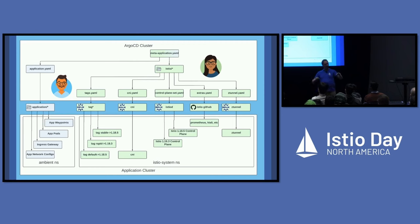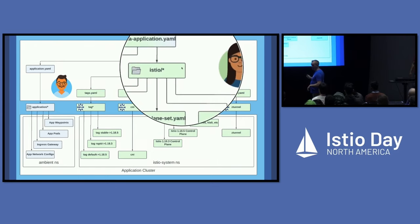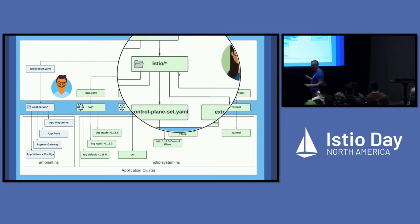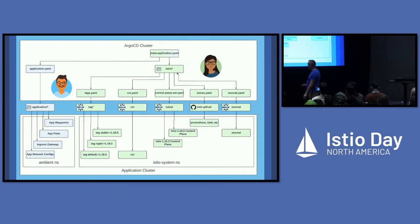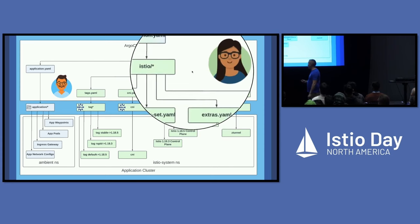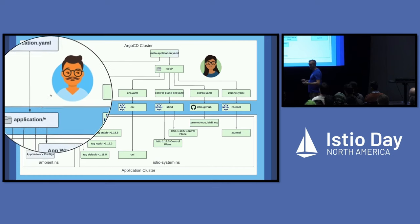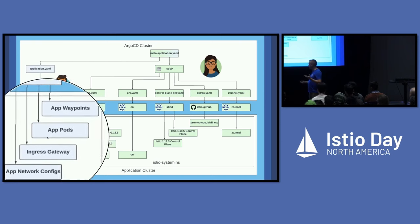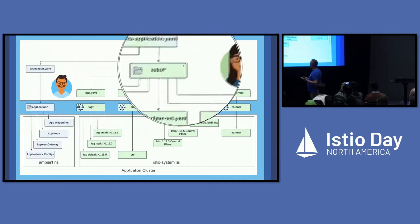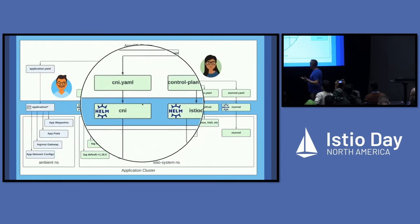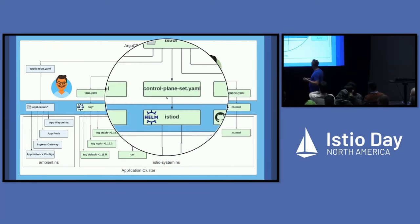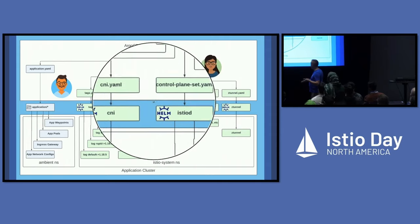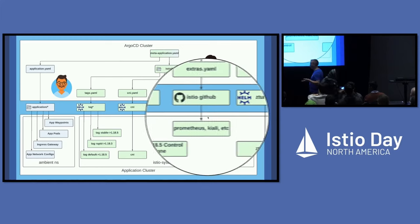If you've opened that GitHub link, you've probably seen a whole lot of YAML. There are only a few things you really need to pay attention to. One: meta-application.yaml — this is our bootstrap file, the only thing you need to kubectl apply once you have an Argo instance up. Everything else gets pulled in automatically through GitOps. We have two folders: our application folder with our sample BookInfo app — the app dev owns this space and runs three gateways, two waypoints for Layer 7 and one ingress gateway. Then we've got our Istio folder owned by our platform engineer, who manages CNI, Z-Tunnel, the set of control planes, all tags and revisions, and some extras.